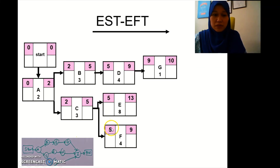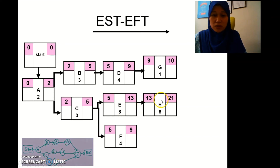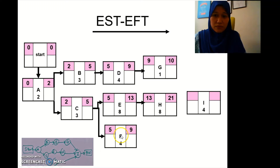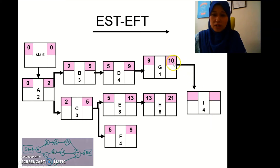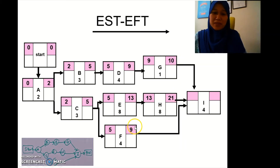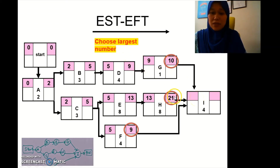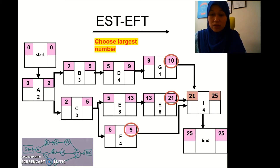Then we go to C. After C we have E and F. From E to H: we bring 13 here, and 13 plus 8 is 21. Then C to F: five plus four is nine. F, H, and G all go into I. We have three numbers — the rule says to choose the largest, which is 21. So 21 plus 4 is 25.